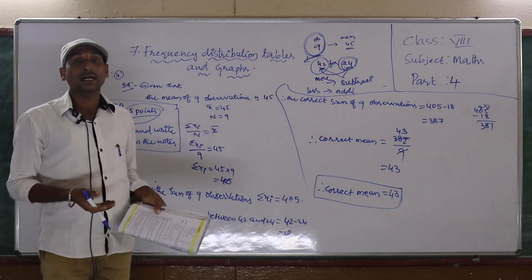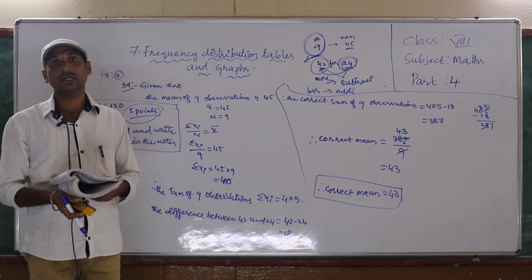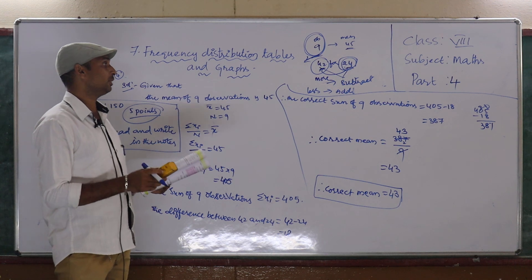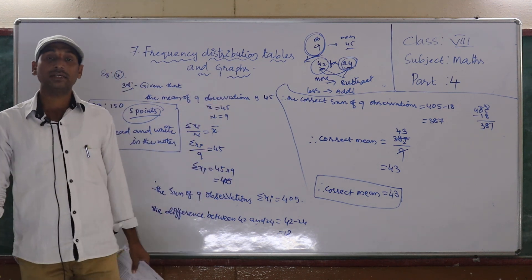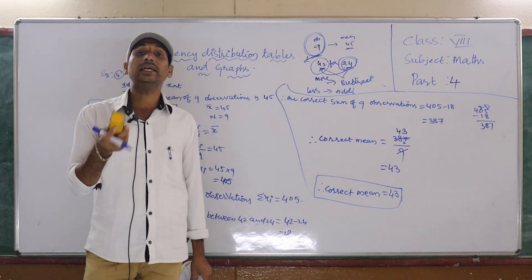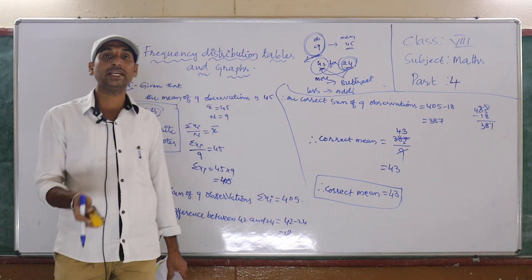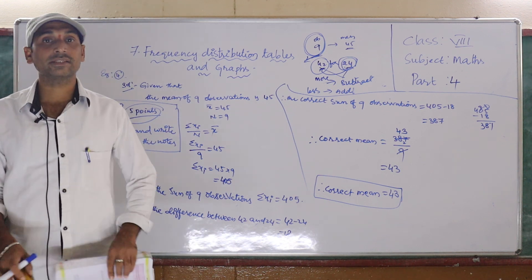Then after this, we will learn arithmetic mean by deviation method. That is very important. Based on this, in the deviation method, we will discuss three types. That is very important, we will discuss in the next class.